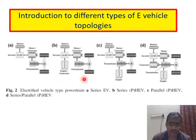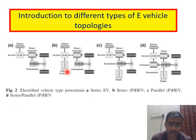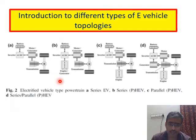Now let us look at the second type — Series HEV. Compared to the first one, a small difference is that the inverter is supplied from both battery as well as the engine. The inverter again supplies to the motor. The main advantage is that torque is now shared by the engine as well as the battery, so the torque will be smoother and acceleration will be better compared to the previous case. However, since the torque is not given directly to the transmission system, torque control is less easy. That is the main drawback. In order to overcome this, we go with parallel HEV.